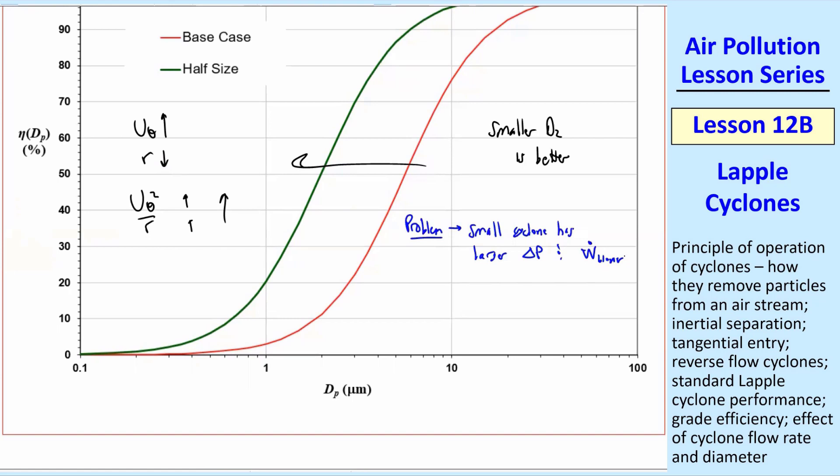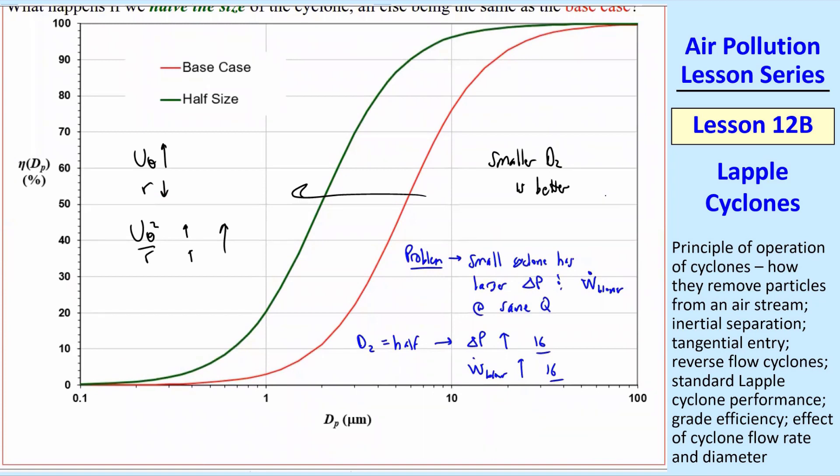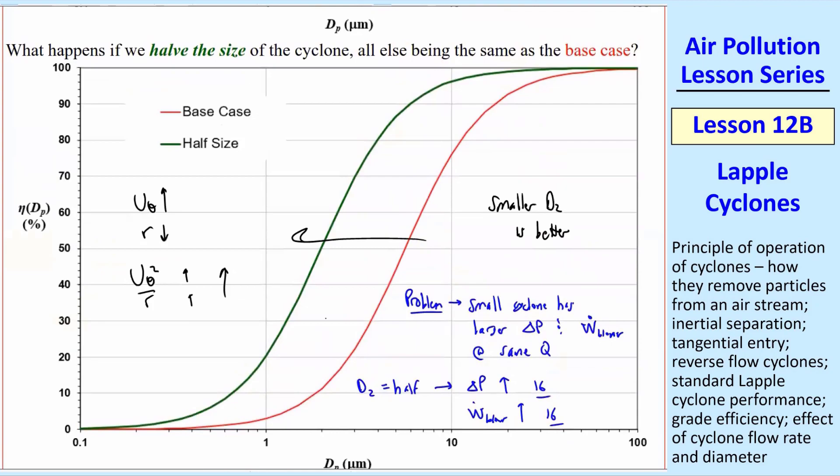But you have a larger delta P and a larger W_dot_blower. In this case, with D2 equal half, delta P is up by a factor of 16, and W_dot_blower is up by a factor of 16. So 16 is significant. We were already spending a dollar an hour roughly with our other case, and then we're going to spend now $16 an hour. So there are all kinds of issues with that, and that's where I'll stop though right now.